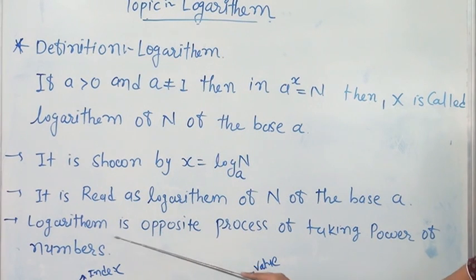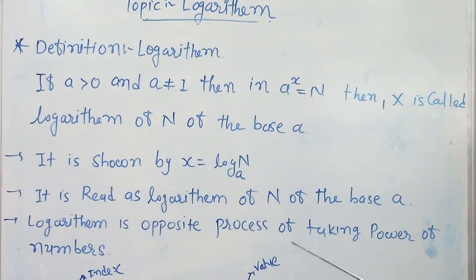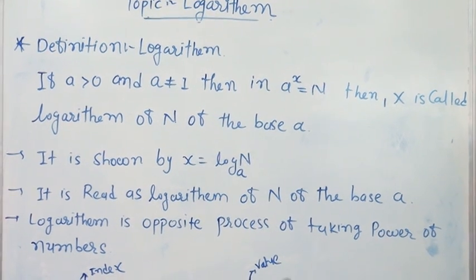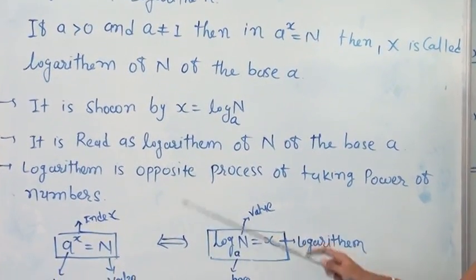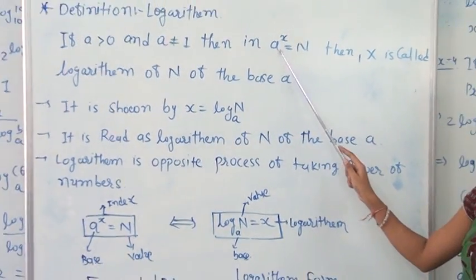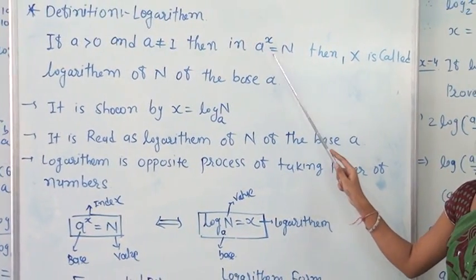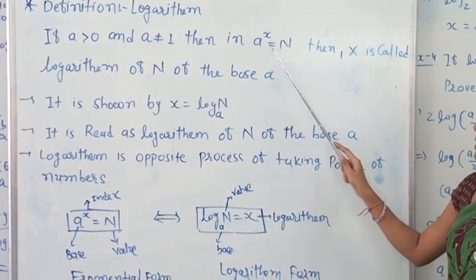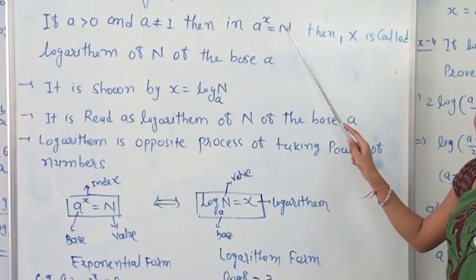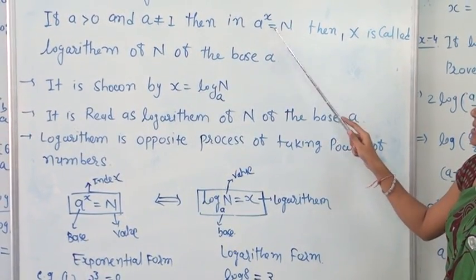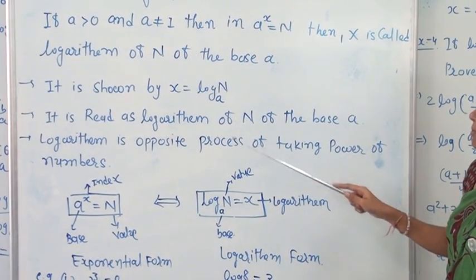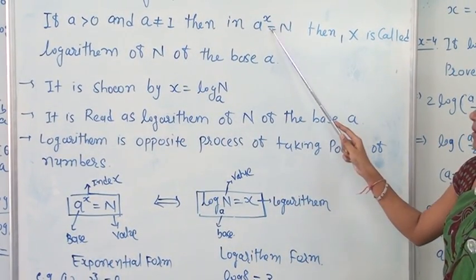Logarithm is the opposite process of taking the power of numbers. When we take the power of a number, the form is a raised to x equal to N. But logarithm is the opposite process of taking power.